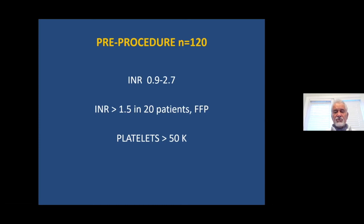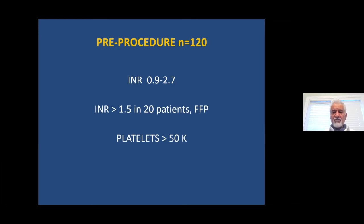In 20 out of 120 patients, we administered fresh frozen plasma because their INR was higher than 1.5. Regarding platelets, we do not perform procedures at a platelet count less than 50,000. If the patient's platelets are below that threshold, we ask the clinician to give packed platelets before the procedure — and actually perform the procedure as the fresh frozen plasma and platelets are infusing through the drip.